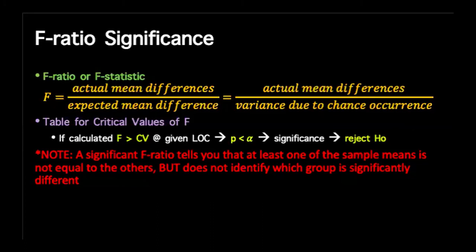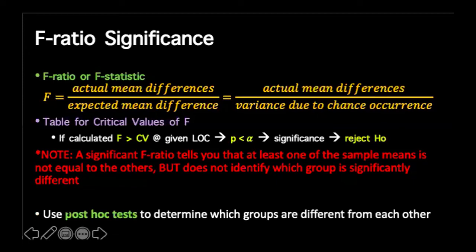A significant f-ratio tells us that at least one sample is not equal to the others — there's at least one significant pair — but we don't know which pair is significantly different just from the ANOVA results alone. So we introduce another test: post-hoc tests, to determine which pairs are significant between our groups. We'll go into that after looking at the f-table.